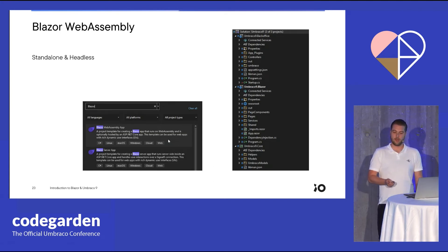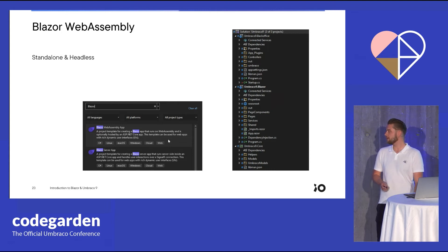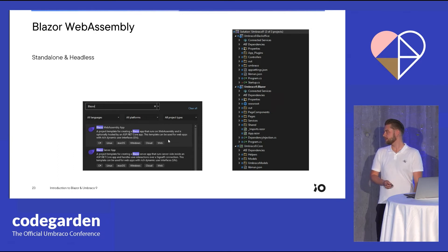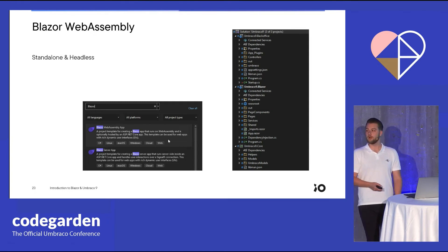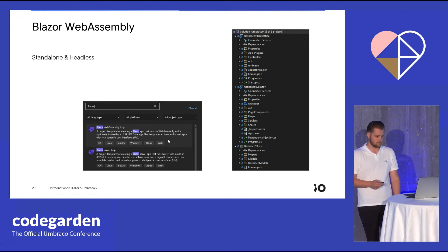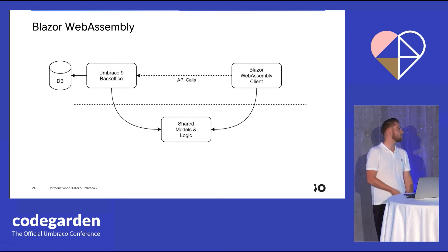The second option will be to integrate Blazor WebAssembly using web components into our application. For the standalone setup, I created a very basic example project where we're able to use both the WebAssembly client and an Umbraco server in the same solution, as long as we don't directly reference the two projects between them. The benefit of such a project setup is that we're able to share client-side logic and models between the two applications, as long as we don't directly reference any Umbraco-related DLLs between the two different projects.